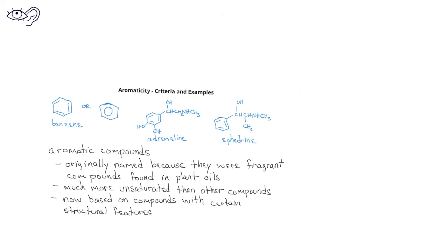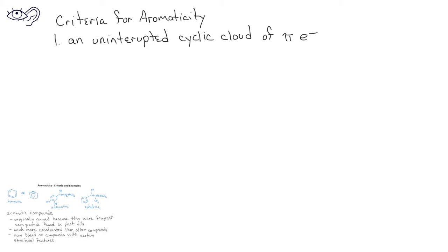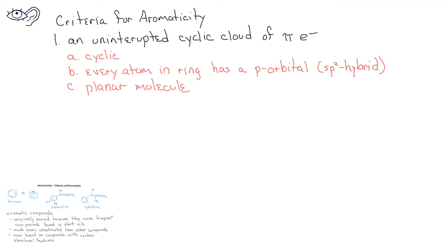In order for a compound to have aromaticity, it has to have a significant amount of delocalization. The criteria for aromaticity are as follows. First, the molecule has to have an uninterrupted cyclic cloud of pi electrons. That means that they must be cyclic or in a ring, and every atom in the ring has to have a p orbital.